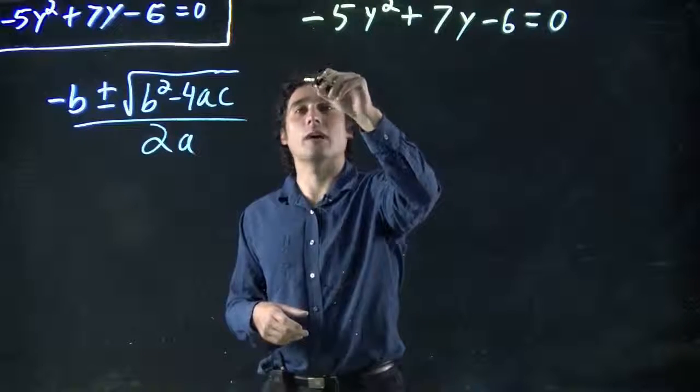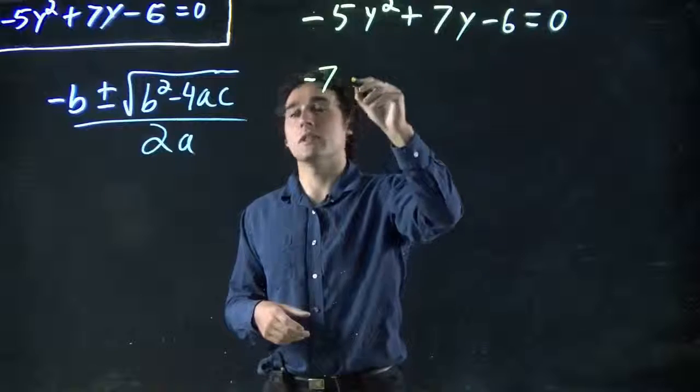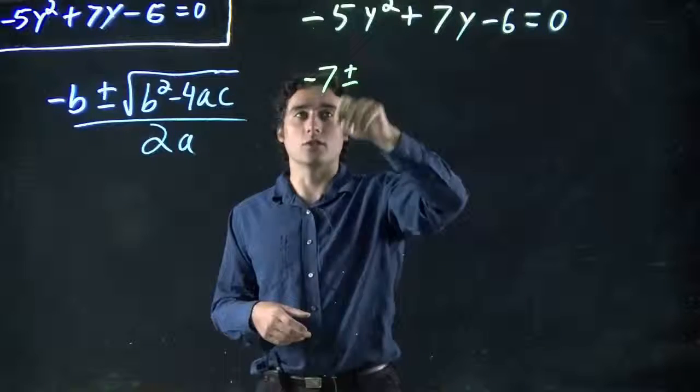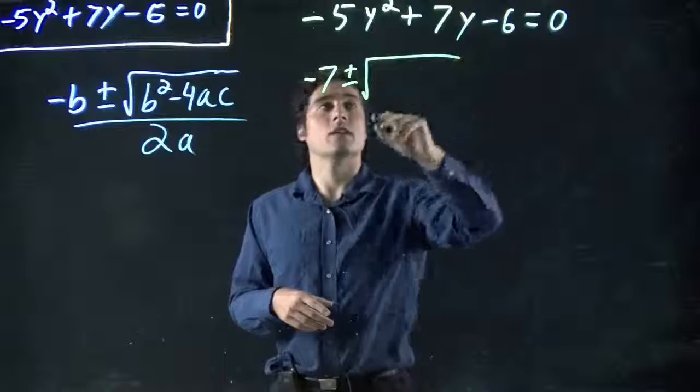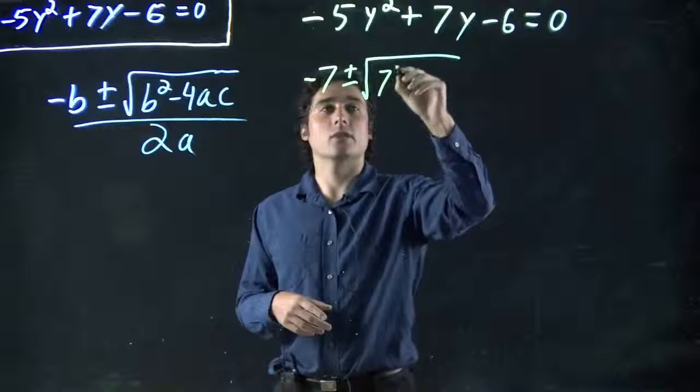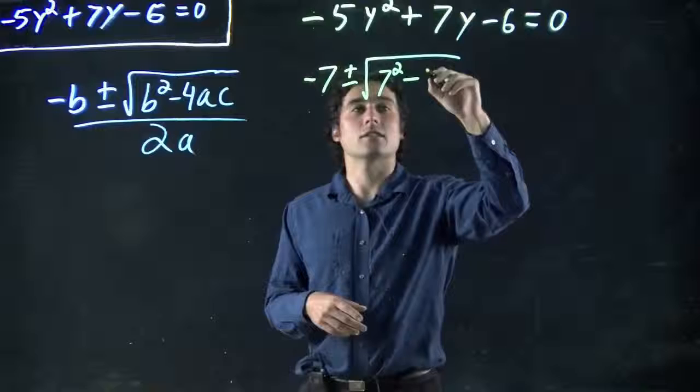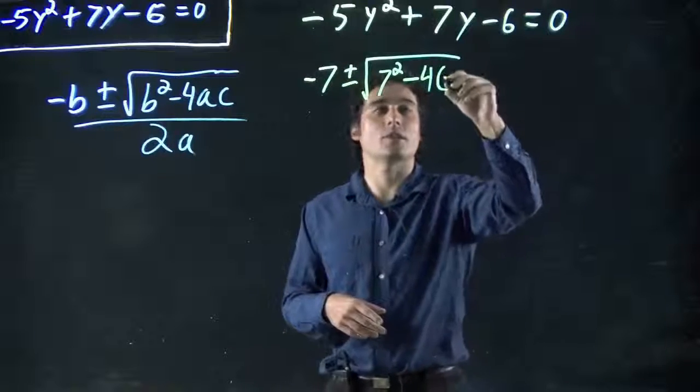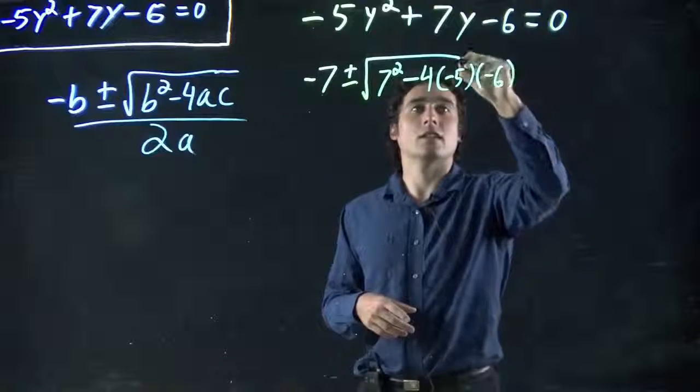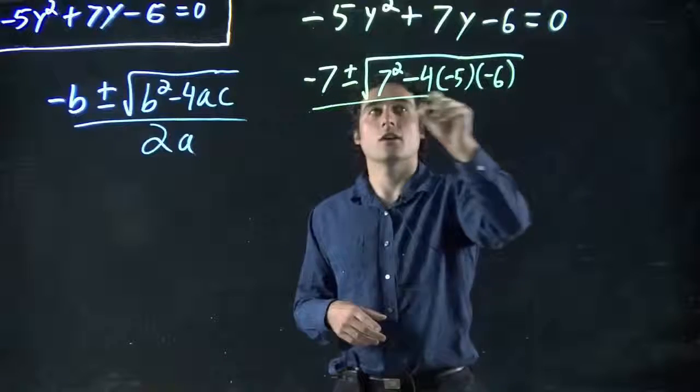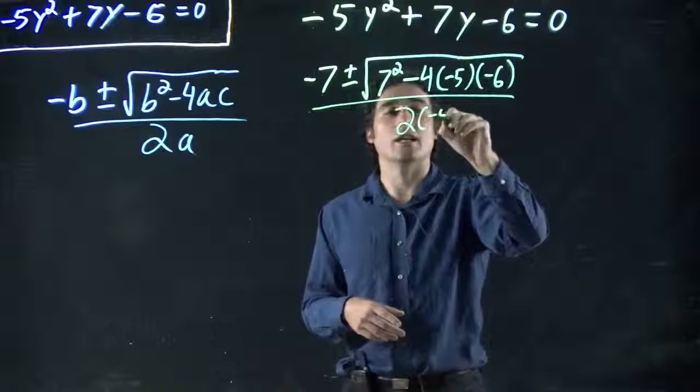So minus b, so minus 7 plus or minus, remember there's possibly two solutions at least, 7 squared, or b squared, minus 4 times a, which is minus 5, times c, which is minus 6. Extend my square root all over 2 times minus 5.